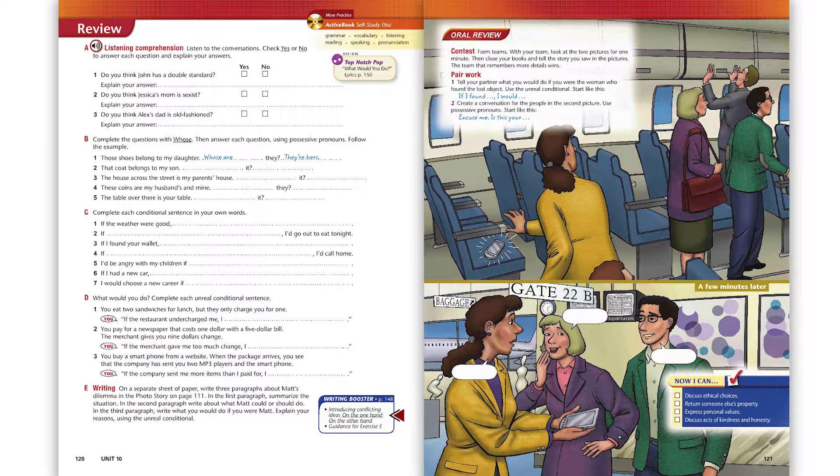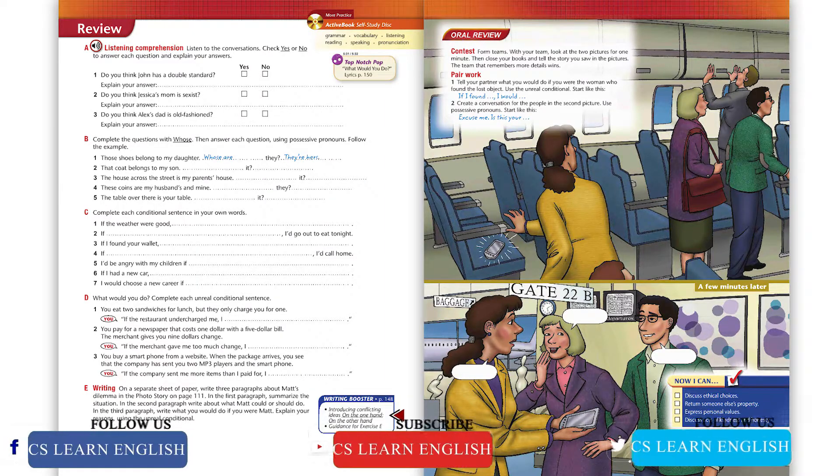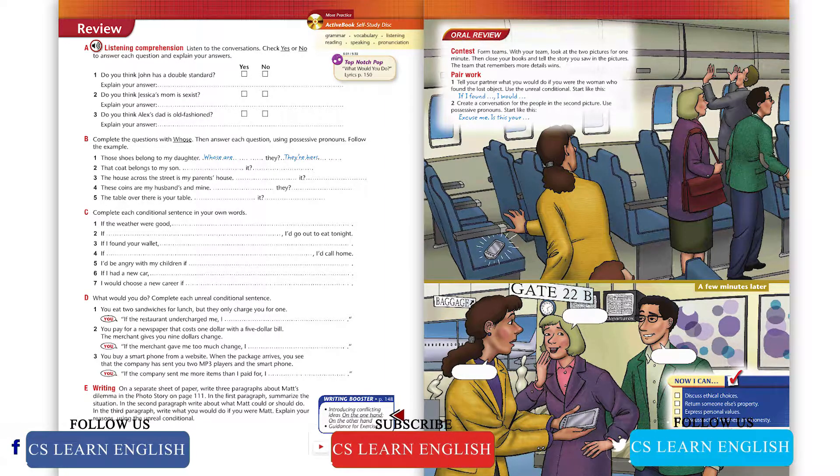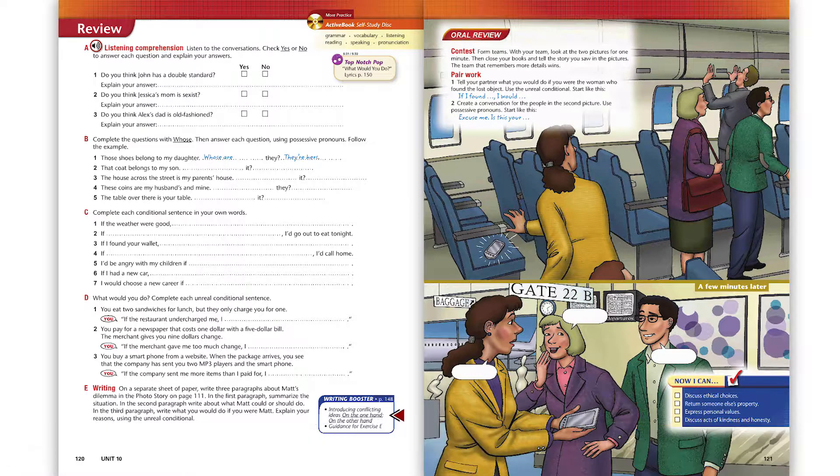Page 120, Exercise A: Listening Comprehension. Listen to the conversations, check yes or no to answer each question, and explain your answers. Conversation One: 'Grandma, you're going to get a tattoo? You've got to be kidding!' 'Why? What's wrong with a tattoo?'